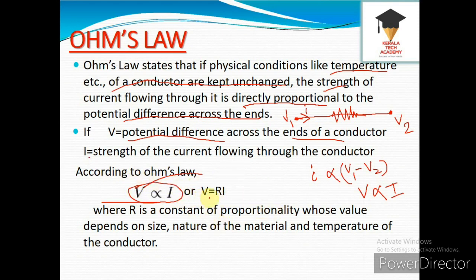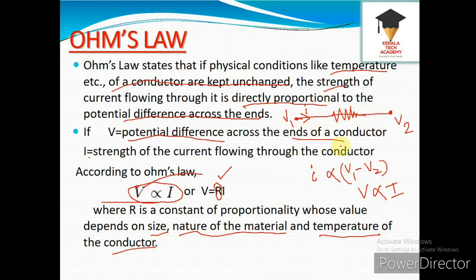Removing the proportionality, V is equal to R into I, where R is a constant at a given temperature. The value of R depends on the size, the nature of the material, and the temperature of the conductor.